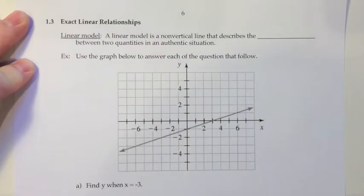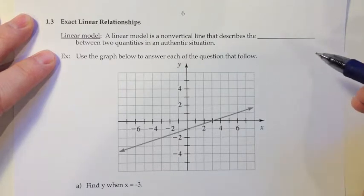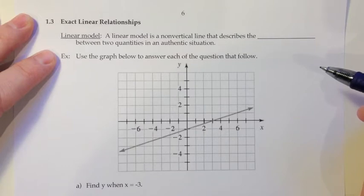Section 1.3: Exact Linear Relationships. In this section we're going to start looking at using straight lines to model real life situations. So we're going to start off with the definition here, which is a linear model. A linear model is a non-vertical line that describes the relationship between two variables in an authentic situation.